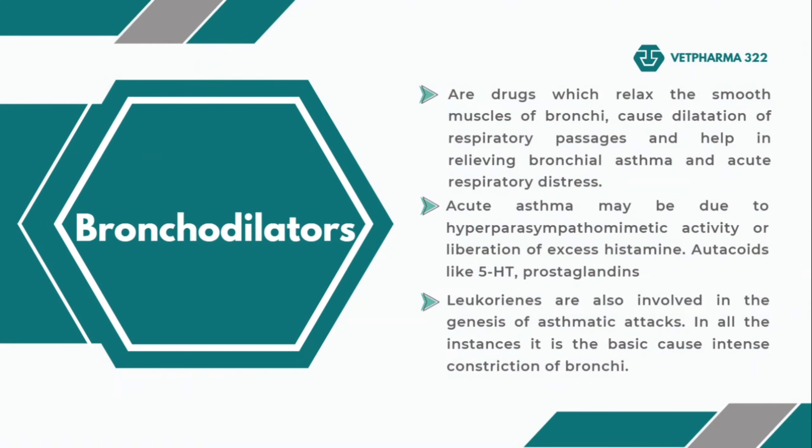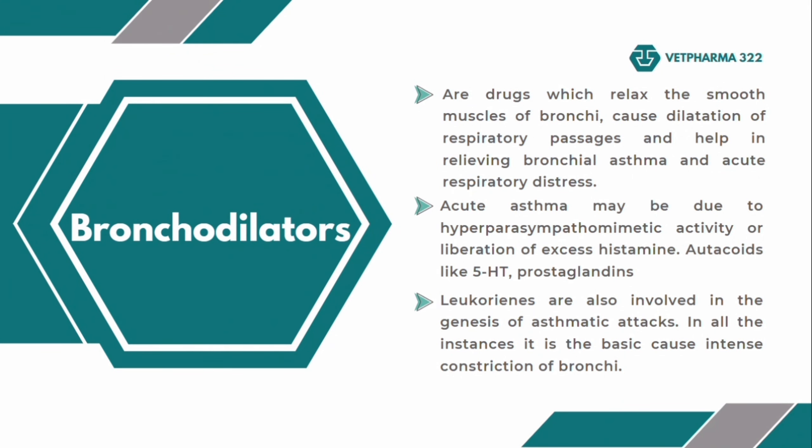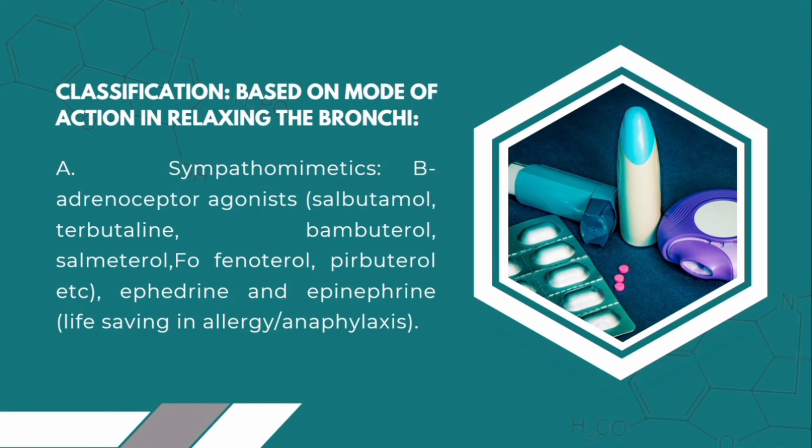Bronchodilators are drugs which relax the smooth muscle of the bronchi, reduce irritation of respiratory passages, and help in relieving bronchial asthma and acute respiratory distress. Obliterative asthma may be due to hyperparasympathetic activity or liberation of excess histamine. Autocoids like 5-HT or serotonin, prostaglandins, and leukotrienes are also involved in the genesis of asthmatic attacks. In all instances, it is the basic cause of intense constriction of the bronchi. Classification is based on mode of action in relaxing the bronchi.